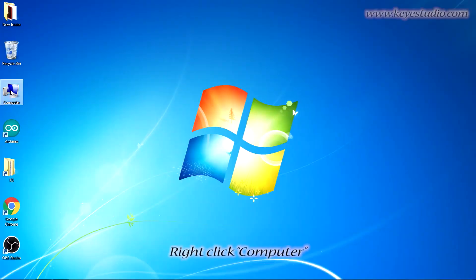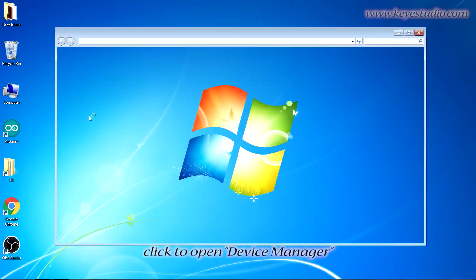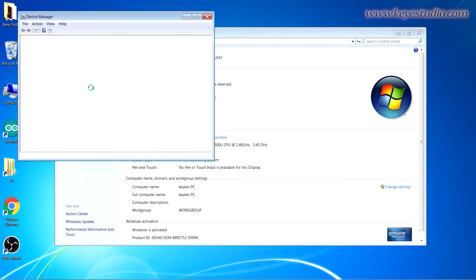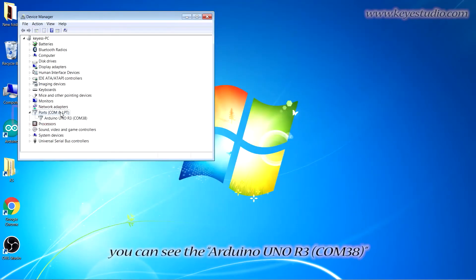Right-click Computer, click Properties, click to open Device Manager. Under Ports, you can see the Arduino UNO R3 COM38.